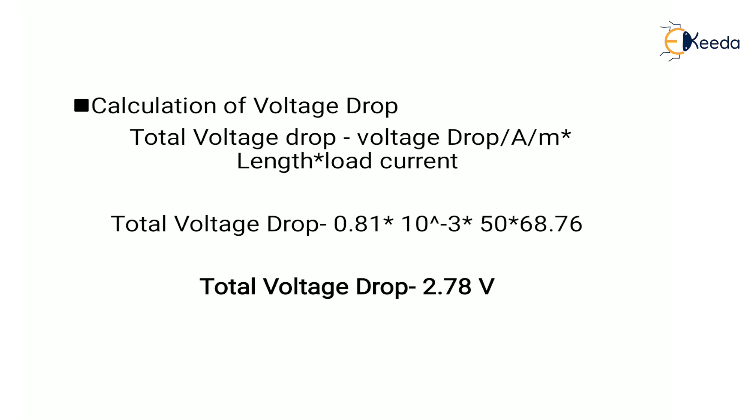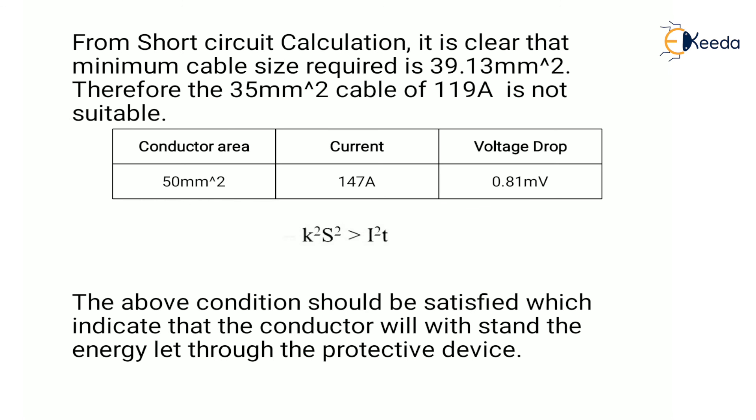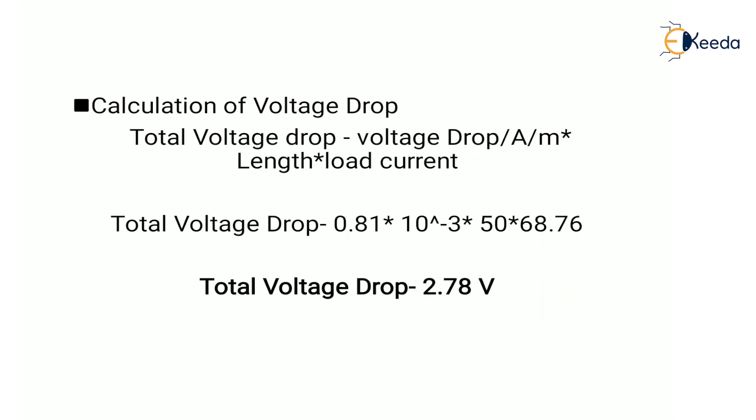Next, we calculate the voltage drop. The formula is: voltage drop = (mV/A/m value) × length × load current. So: 0.81 × 10⁻³ × 50 × 68.76 = 2.78 V. The voltage drop should be within the permissible limit. Thus, the final cable selection is based on current carrying capacity, voltage drop, and short circuit rating.